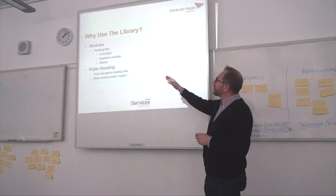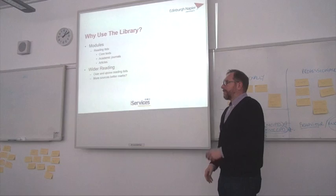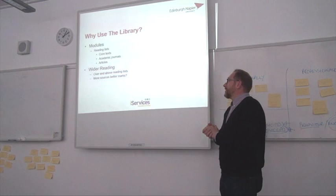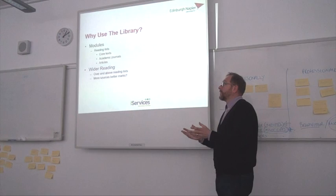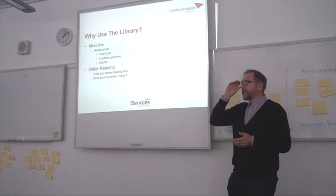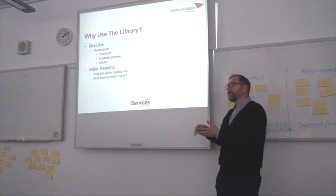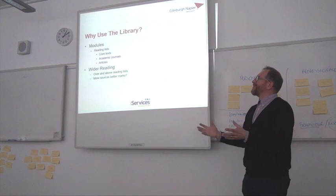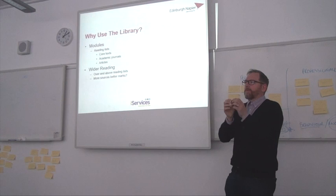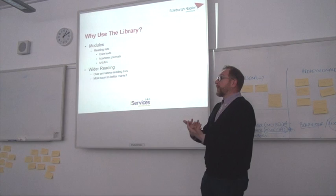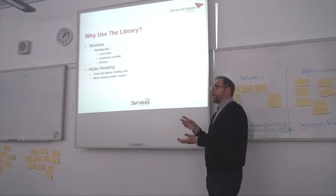Similarly, you'll get journal articles recommended to you. Some of these might be academic journals — so peer-reviewed, 15 pages long, quite dry I'm afraid — but top-notch scholarly theoretical pieces of work. You'll also get linked to other types of articles, so that might be less academic but still very relevant. For example, the CIPD — Chartered Institute of Personnel and Development — they've got their own magazine called People Management. That's not strictly speaking an academic title, but because it's from a professional body and it's practitioners writing in it, especially in a subject like HRM, it's very worthwhile and very useful.